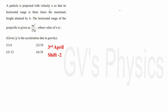A particle is projected with velocity u so that its horizontal range is 3 times the maximum height attained by it. They have given the condition: range R is equal to 3 times the height. The horizontal range of the projection is given as nu²/25g. They are asking the value of n. To handle this question we can take the formula: 4h = r·tanθ.